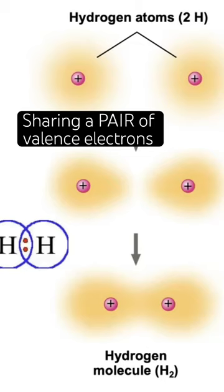The sharing of this pair of electrons brings the two atoms close together. The shared electrons count as part of each other's valence shell, so now each shell has two electrons, satisfying the octet rule.